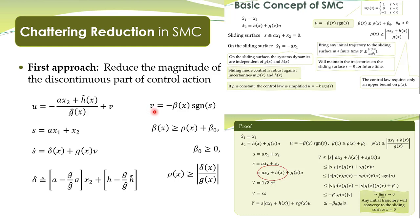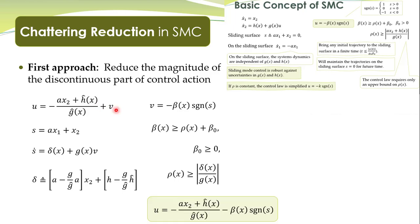Of course, one can also take a quadratic Lyapunov function and follow all the steps to finally reach this control action. The overall control u is composed of two parts: a continuous part and a discontinuous part. Note that beta here is different from the original beta. In the original case, beta was given by the expression with rho as the upper bound on the uncertain term. Here, beta is given by the expression with rho as the upper bound on delta.